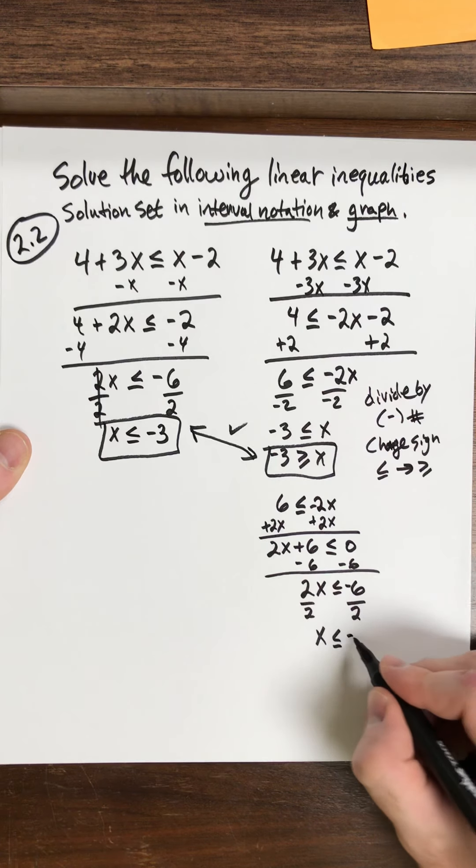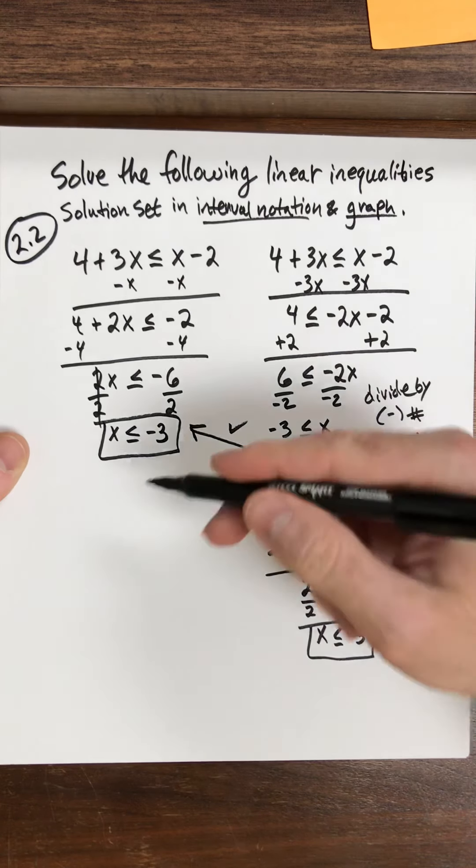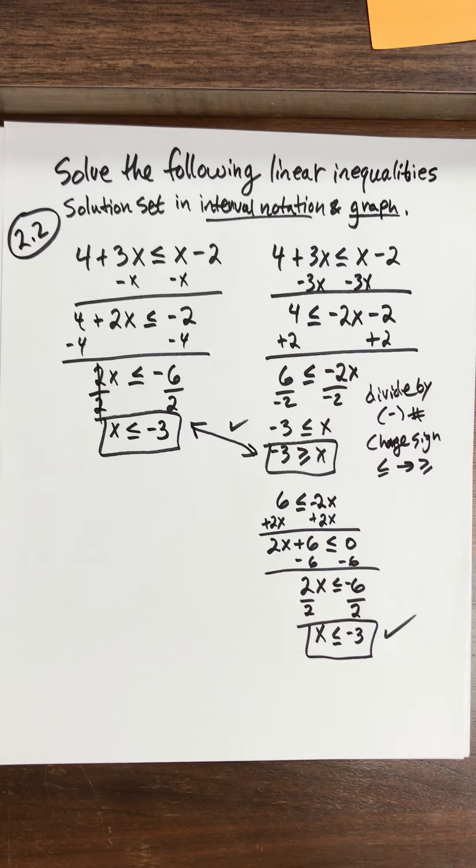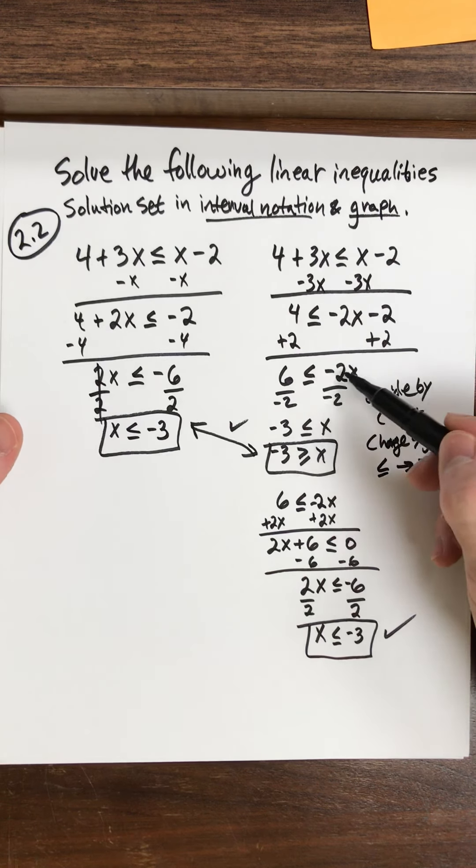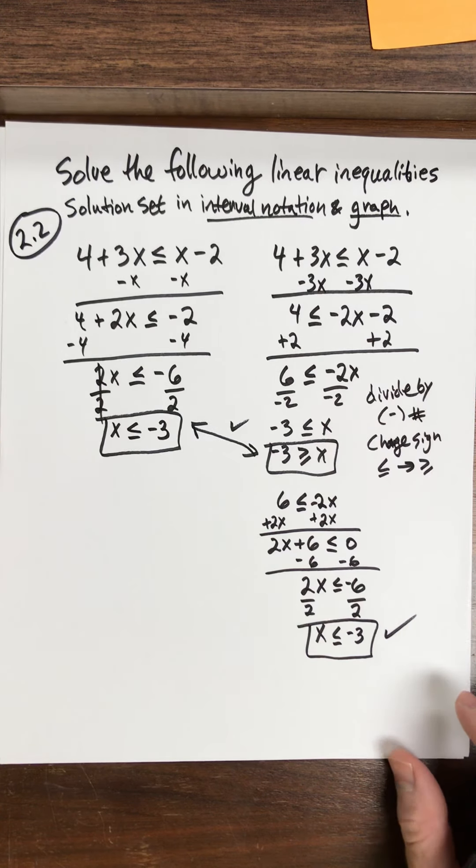See, it doesn't matter which rules you use. As long as you use your rules correctly, you're going to get the correct answer. All right, so just be careful. If you divide by a negative number, you need to flip the inequality sign.